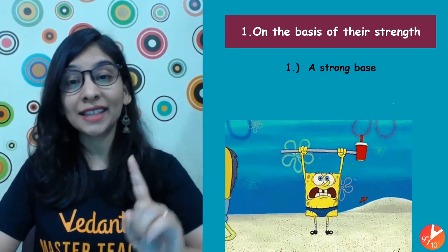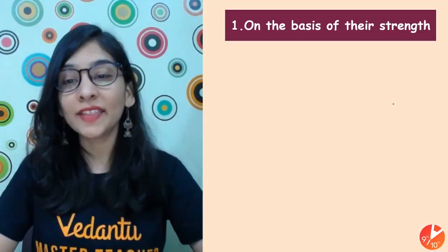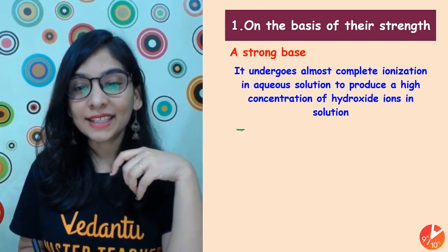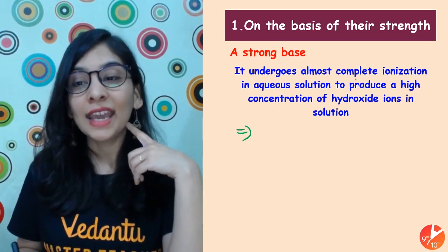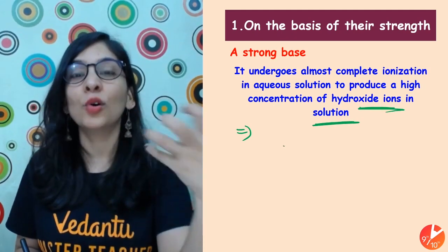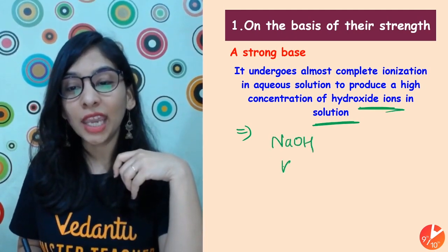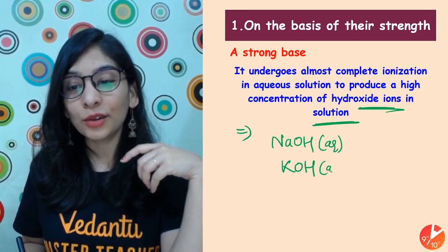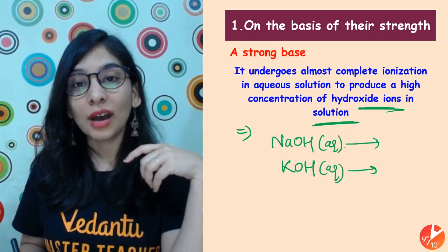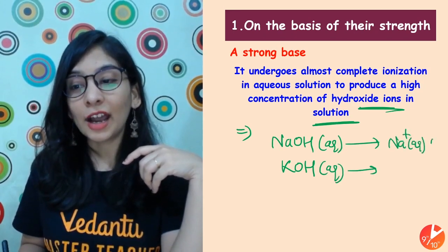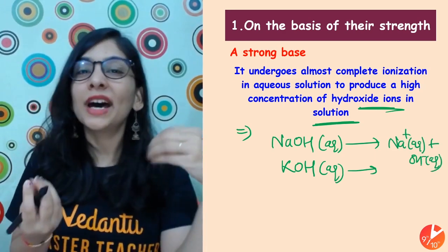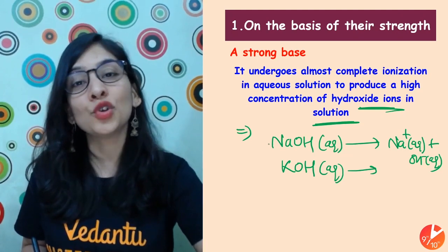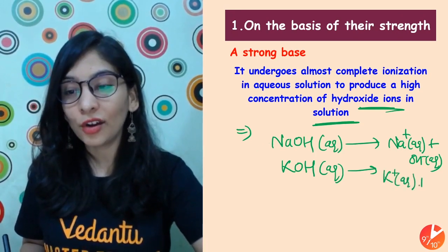How can I identify whether a base is strong or weak? That is totally based upon how they dissociate or ionize in water. A strong base undergoes almost complete ionization in aqueous solution to produce a very high concentration of OH⁻ ions. When I talk about NaOH or KOH — strong alkalis — they are totally ionizing. Their aqueous solution uses a forward arrow because they completely dissociate.